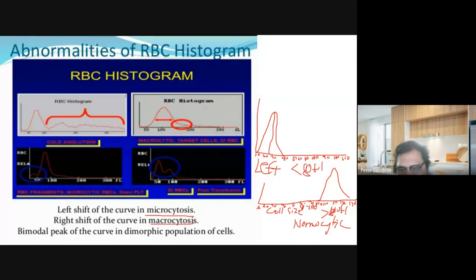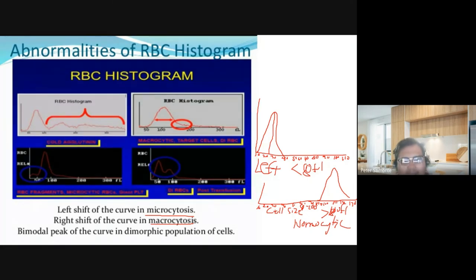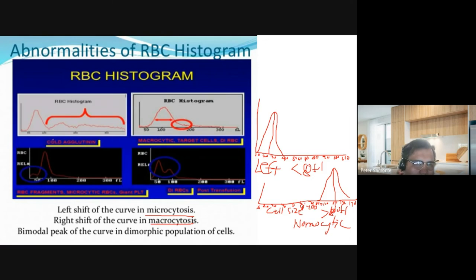Just remember: in a histogram, the peak of your Gaussian bell curve or your curve should be at the middle part — 80 to 100 to be considered normocytic. If there's a shift to the left, the curve rises on the left side, meaning lower femtoliters, less than 80 — a sign of microcytosis. Shift to the right is characterized by macrocytosis. Here is an example of a cold agglutinin RBC histogram and a macrocytic histogram where the peak falls greater than 100.